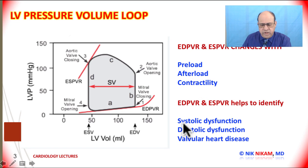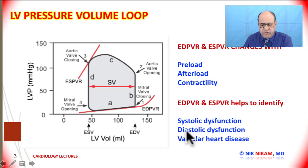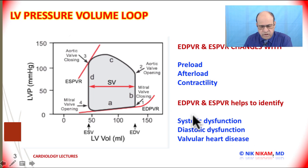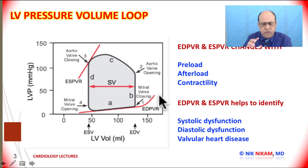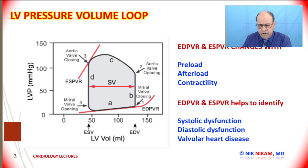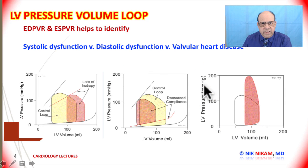Based on these observations, we can see different types of pressure volume loops in patients with systolic dysfunction, in patients with diastolic dysfunction, and in patients with valvular heart disease. Let us look at some examples and see how the pressure volume loop changes in shape and form based on preload, afterload, and contractility.